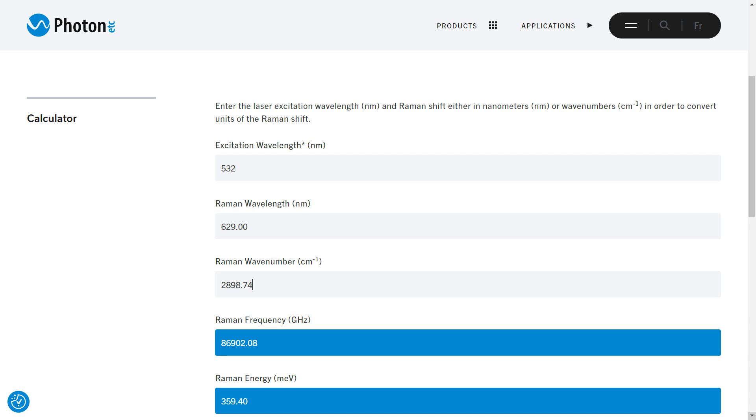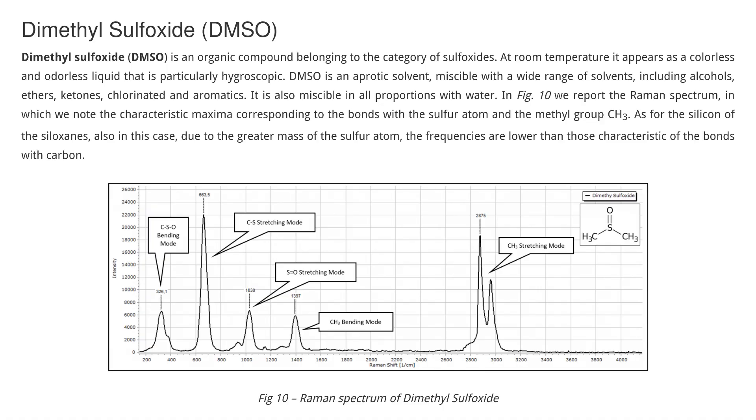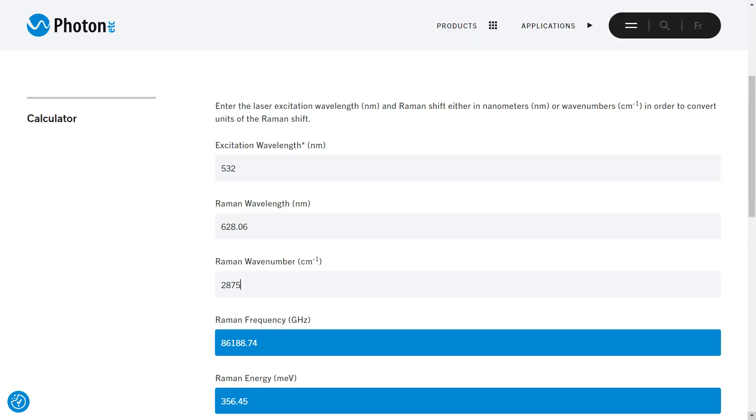And if we run this through a Raman shift calculator we can see that the shift is 2898 odd wave numbers. If we take a look at the Raman spectrum for dimethyl sulfoxide we can see a shift of about 2875 wave numbers which should give approximately 628 nanometers or a 96 nanometer shift. This is more or less spot on absolutely fantastic.